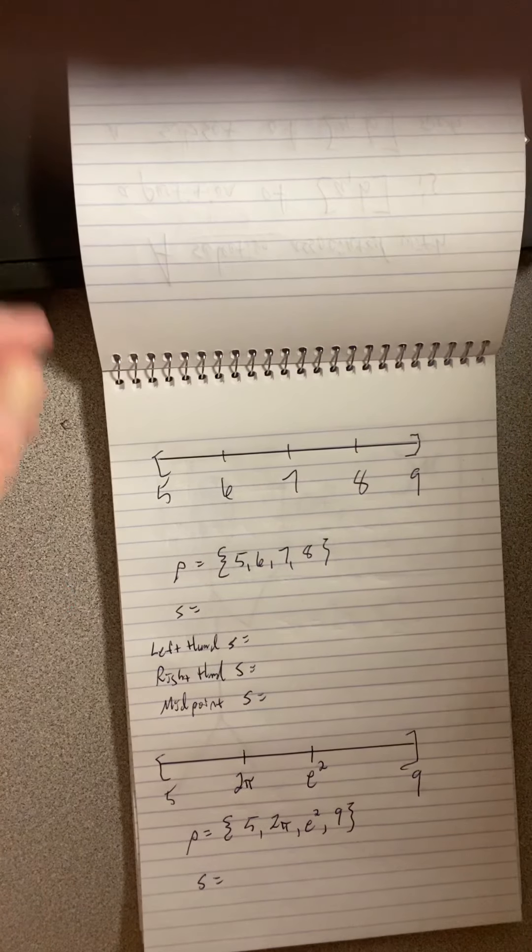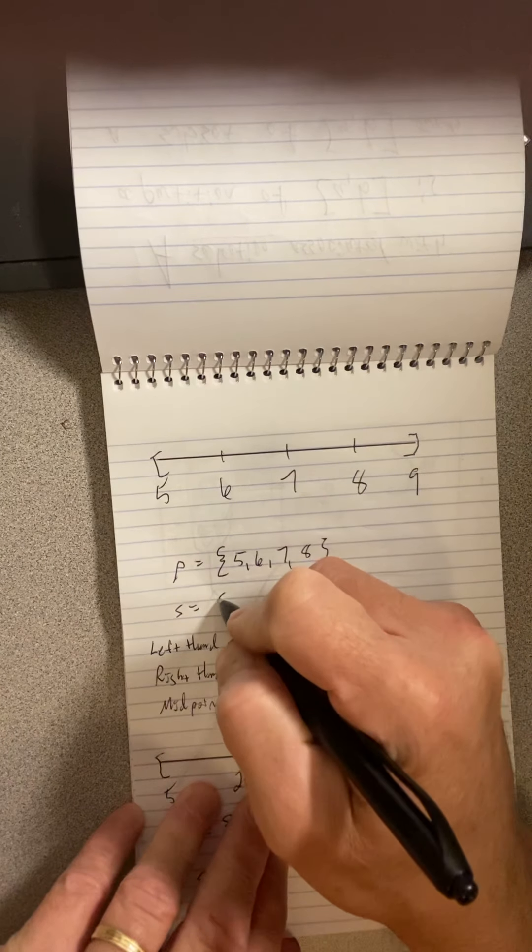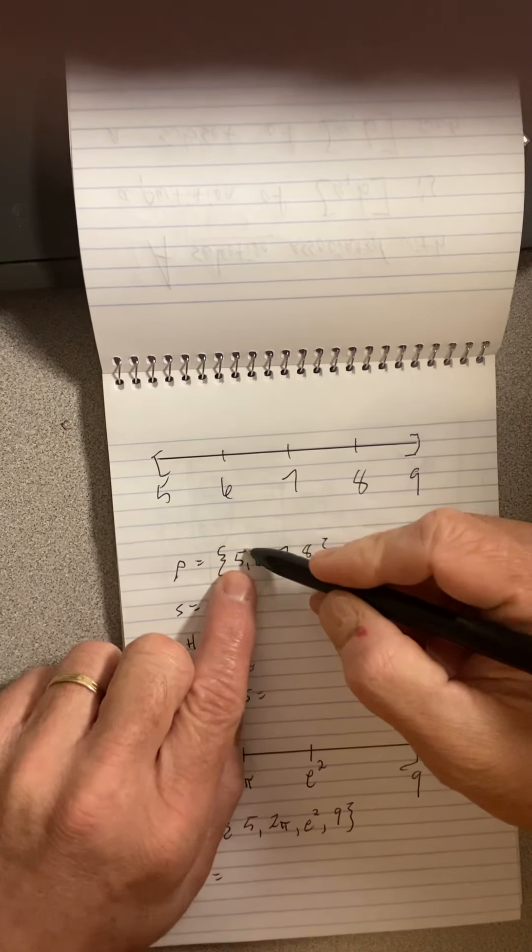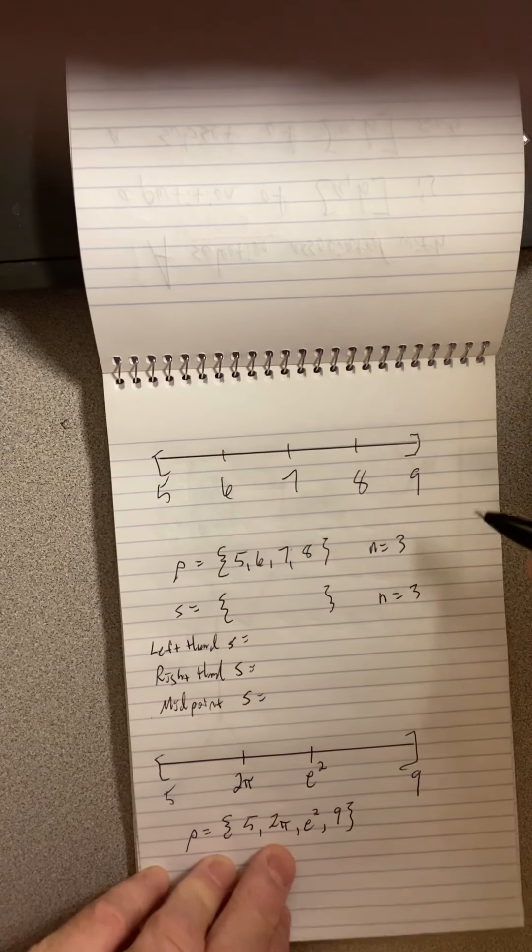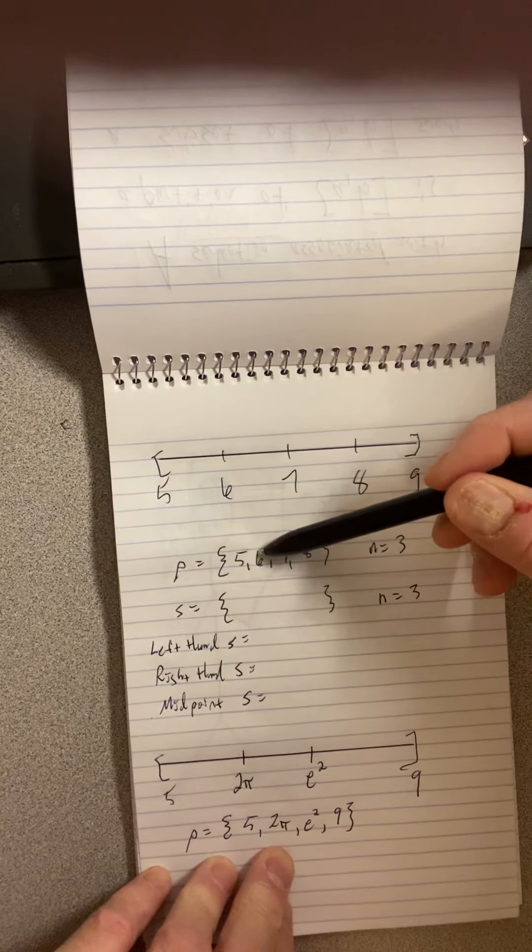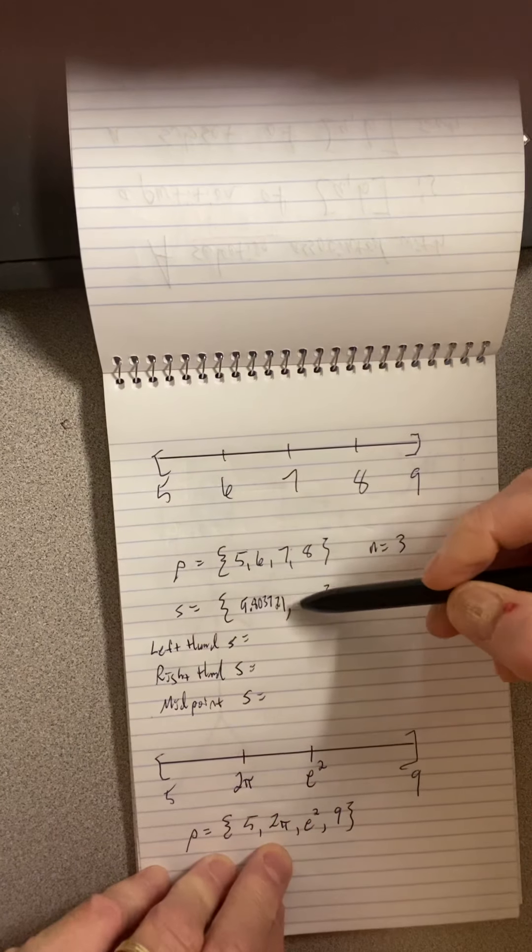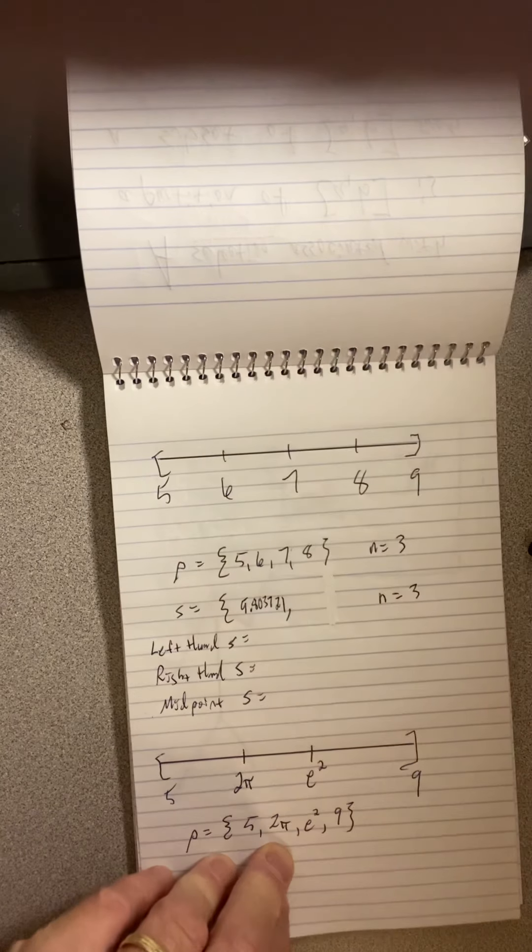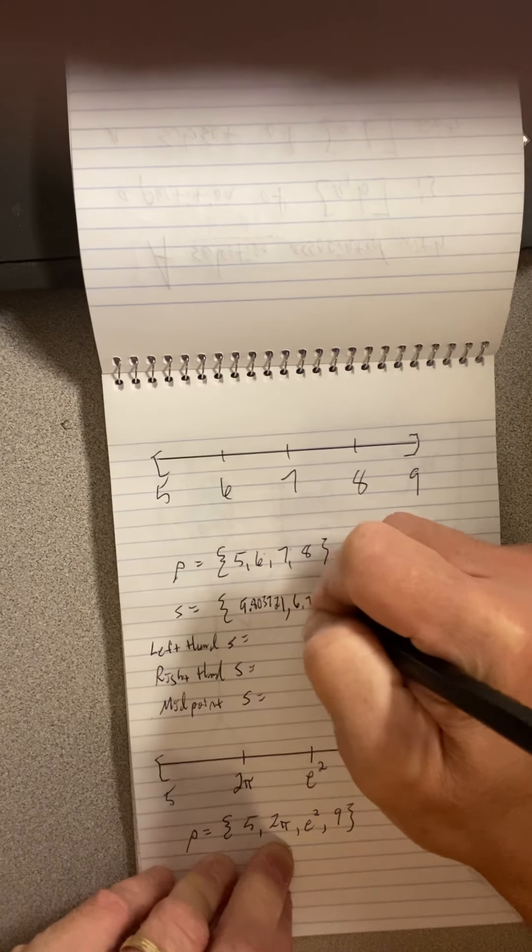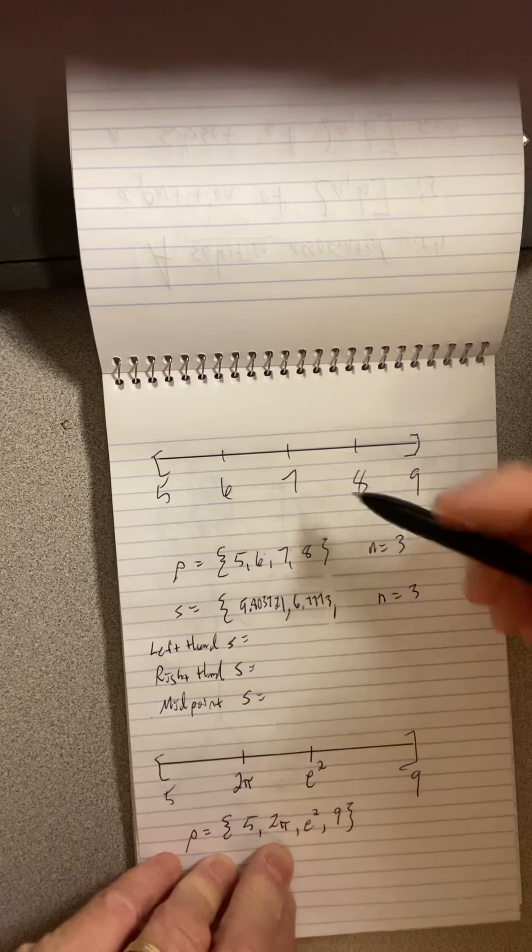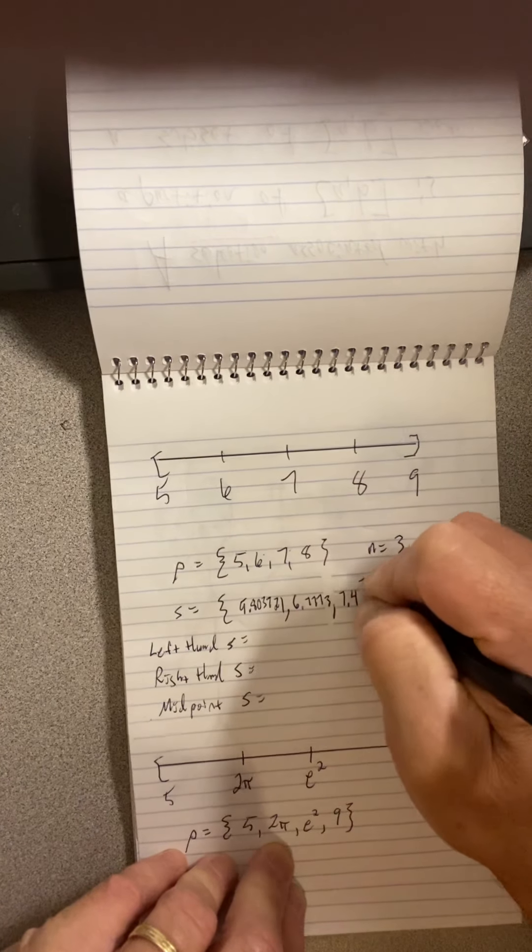So S sub i is an element of this interval here. So you go from up to the i-th choice for x, starting with the choice before that. That seems kind of confusing, but an example will clarify. So let's just do an example. Remember our partition from 5 to 9 that was regular? Let's get some selections associated with that. Now remember, this is 0, 1, 2, 3. So this is a size 3 partition. So this will be a size 3 selection. Now, I must choose a selection point from 5 to 6. Like maybe 5.803721. Boy, I'm going to have to choose easier numbers if I'm going to fit in here. Now I have to choose from 6 to 7, so maybe I'm going to choose everybody's favorite number, 6.7773. And then I have to choose a number from 7 to 8, so maybe I'll choose everybody's least favorite number, 7.4. And there is a selection.